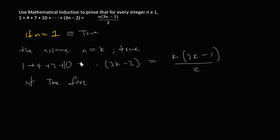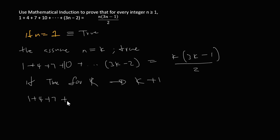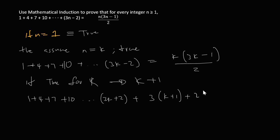If it is true for k, that implies it should also be true for k plus one. Let's prove this. If we substitute n with k plus one, we write the sequence again: one plus four plus seven plus ten, going on until three k plus two, because now the number of terms is k plus one, so the last term is three times k plus one minus one, which gives three k plus two.